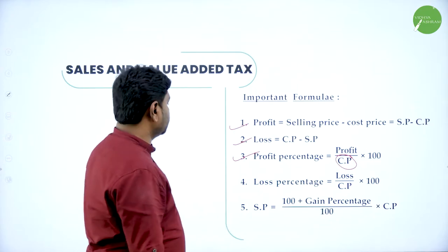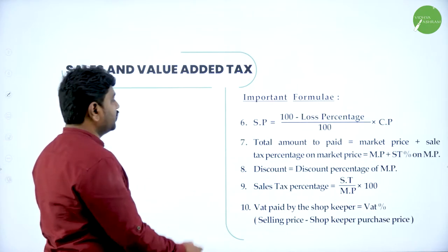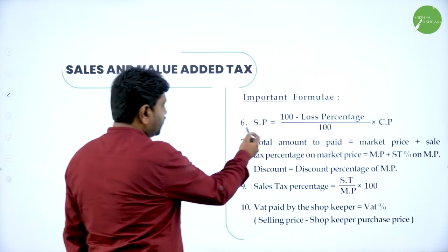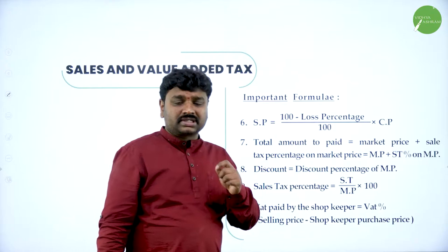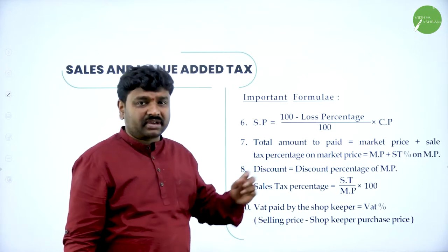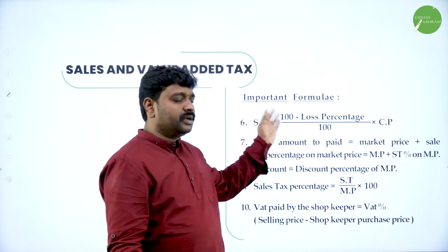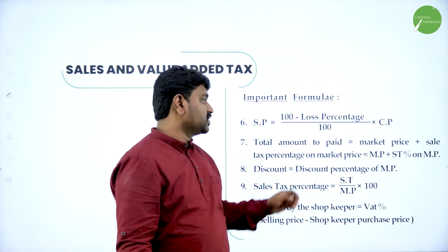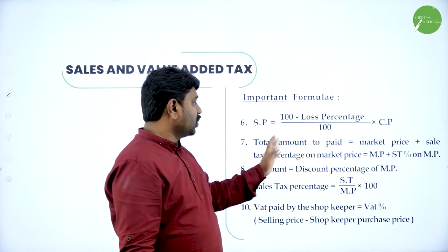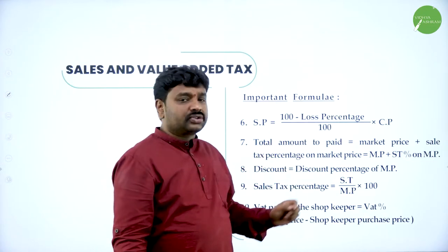When you are in loss, selling price can be calculated by: (100 minus loss percentage) divided by 100, multiplied by cost price.